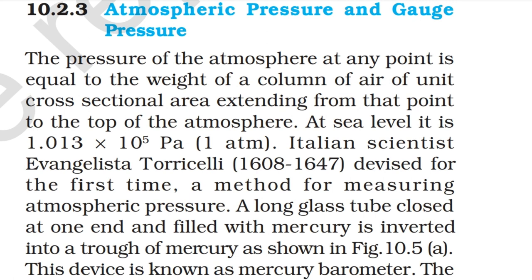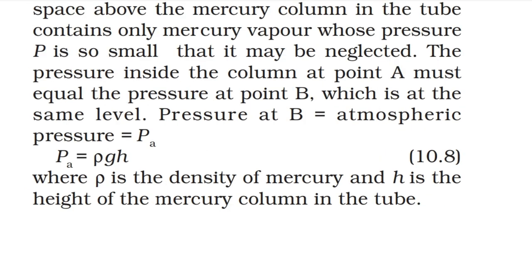Atmospheric pressure and gauge pressure: the pressure of the atmosphere at any point equals the weight of a column of air of unit cross-sectional area extending from that point to the top of the atmosphere. At sea level it is 1.013×10⁵ Pa. Italian scientist Evangelista Torricelli devised the first method for measuring atmospheric pressure: a long glass tube closed at one end, filled with mercury, is inverted into a trough of mercury as shown in figure 10.5a. This device is known as a mercury barometer.